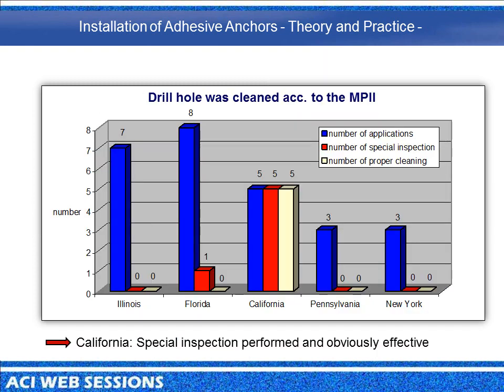This slide shows the necessity of special inspection for adhesive-bonded anchor systems. Continuous or periodic special inspection was only found in California and in one case in Florida. While in California all boreholes were cleaned correctly and anchors were installed correctly, in all other locations the boreholes were not cleaned correctly. This clearly indicates the need for effective special inspection, since in Florida the special inspection was not effective.